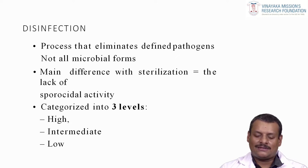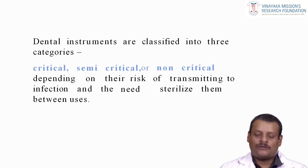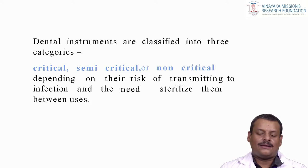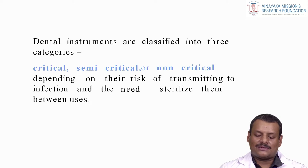The main difference is that disinfection lacks sporicidal activity. It is categorized into three levels: high, intermediate, and low. Dental instruments are classified into three categories — critical, semi-critical, or non-critical — depending upon their risk of transmitting infection and the need to sterilize them between uses.